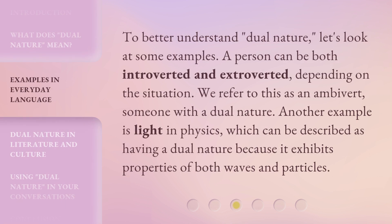To better understand dual nature, let's look at some examples. A person can be both introverted and extroverted, depending on the situation. We refer to this as an ambivert — someone with a dual nature. Another example is light in physics, which can be described as having a dual nature because it exhibits properties of both waves and particles.